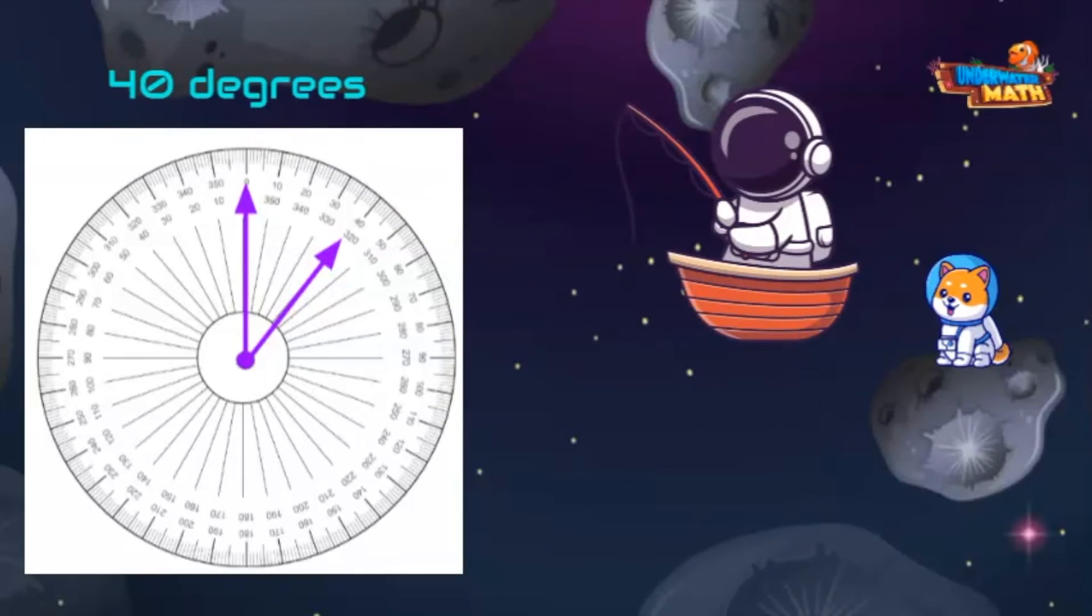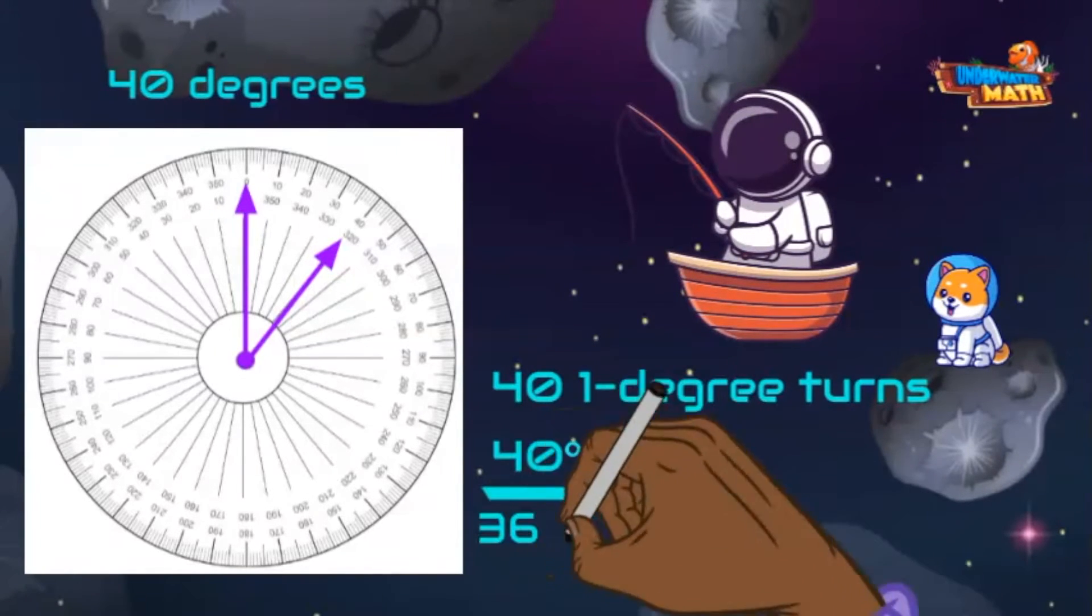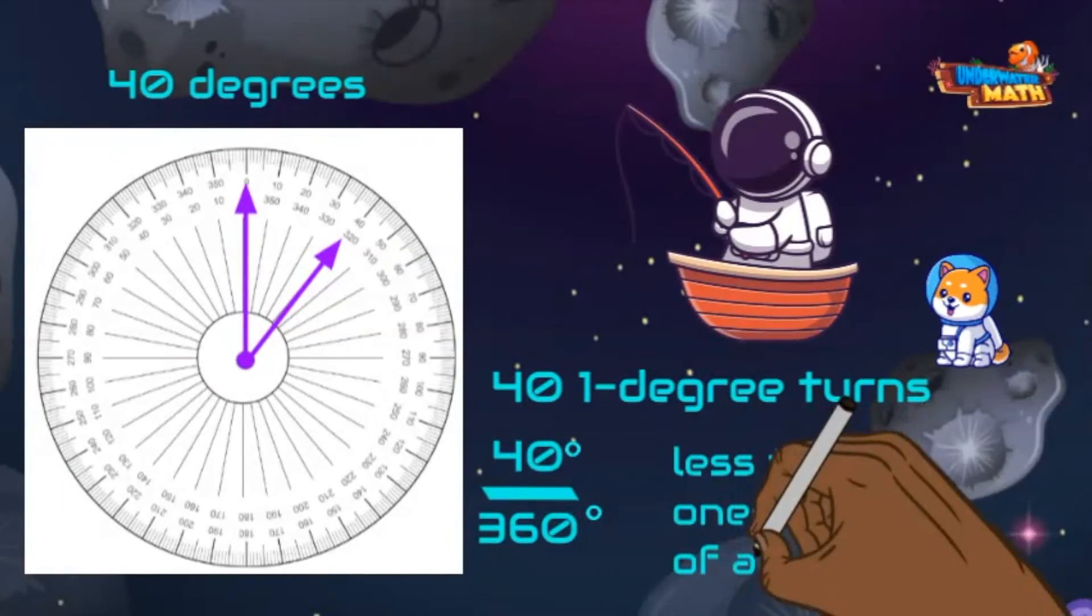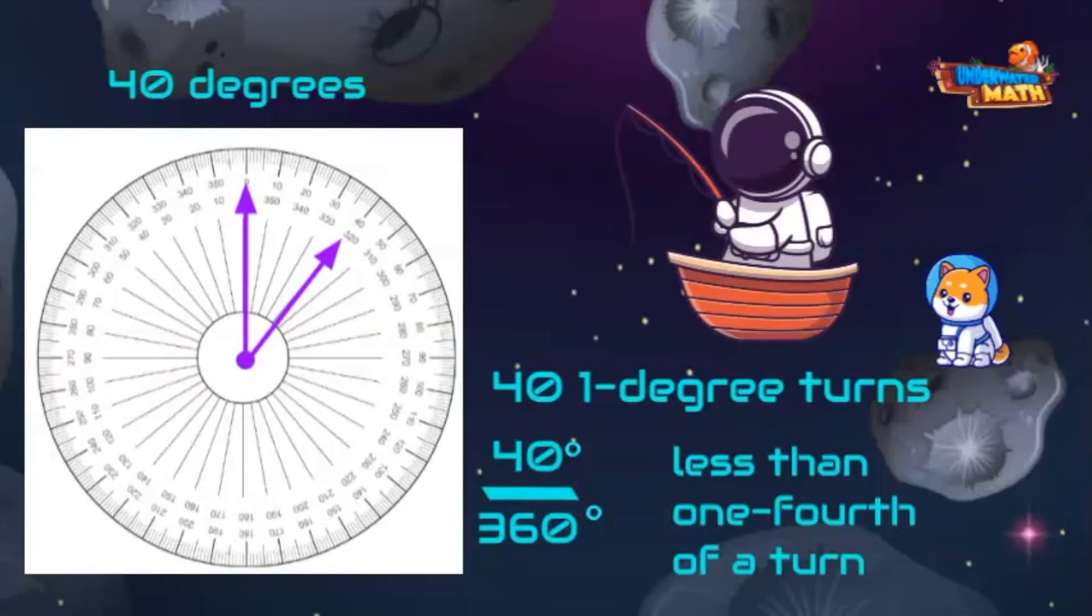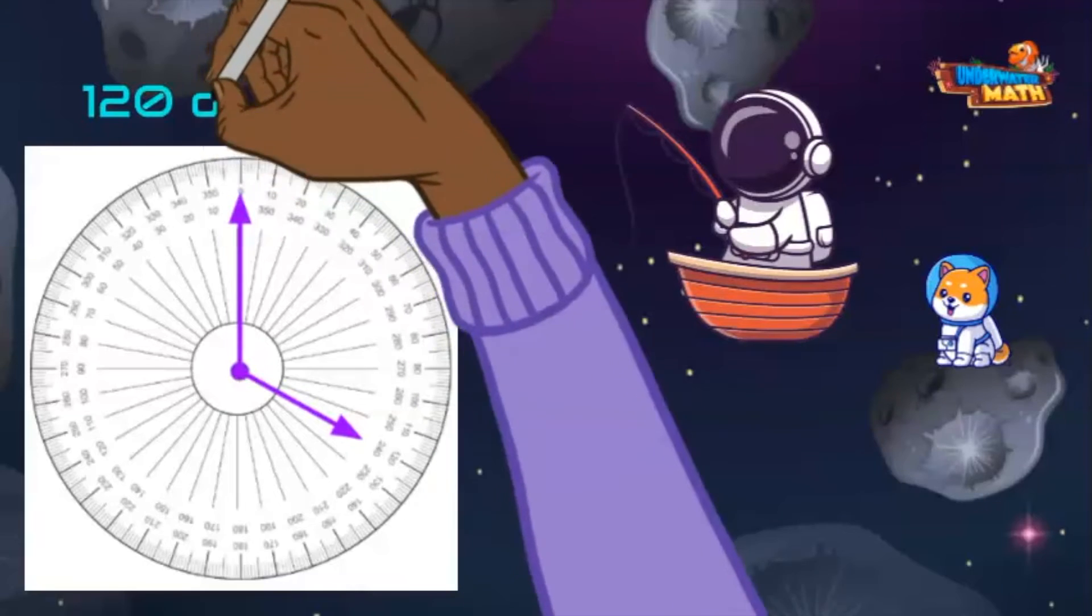Check out what angle I just caught! Let's look at this acute 40-degree angle. Since it measures 40 degrees, it has 40 one-degree turns out of 360. It also is less than one-fourth of a turn.